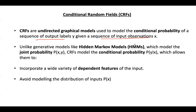Unlike generative models like HMMs, which model the joint probability, conditional random fields model the conditional probability. This allows them to incorporate a wide variety of dependent features of the input and also avoid modeling the distribution of inputs.